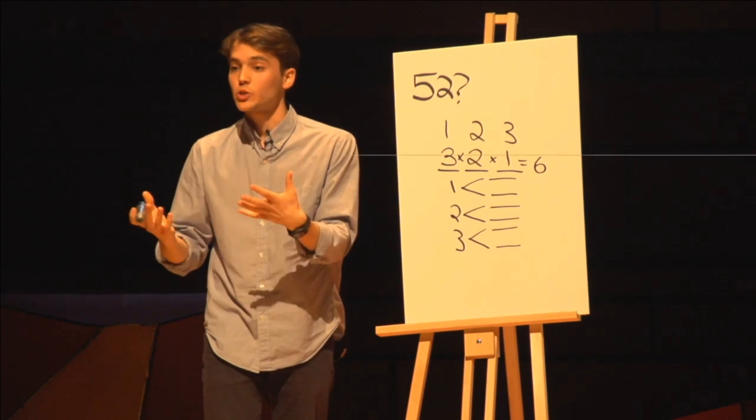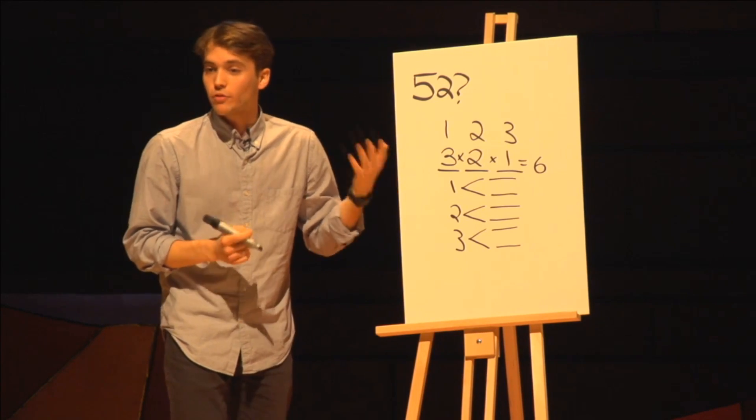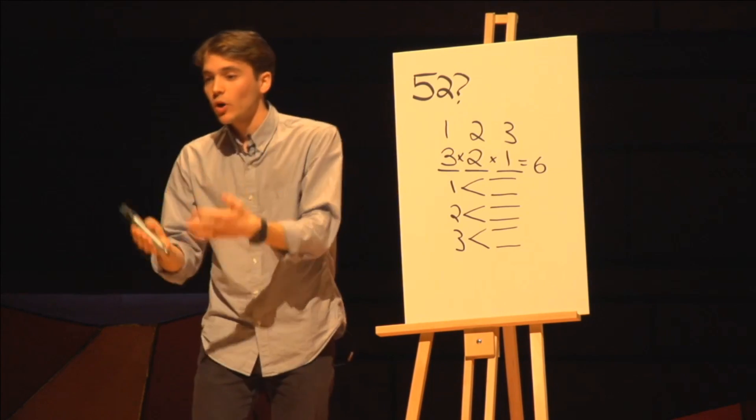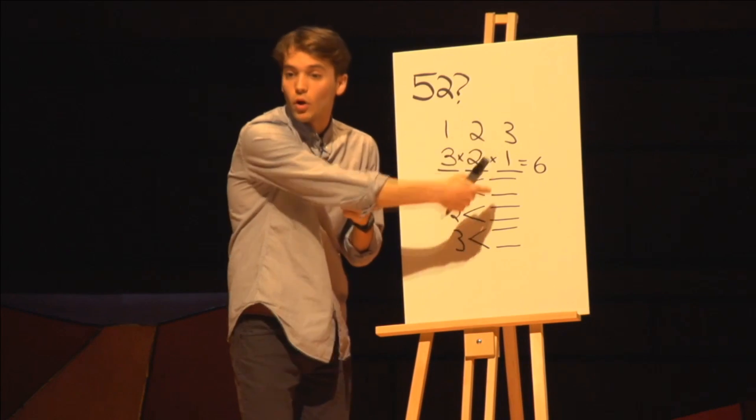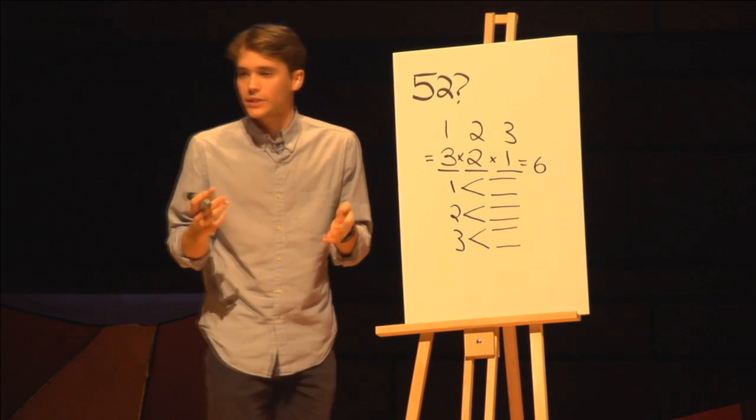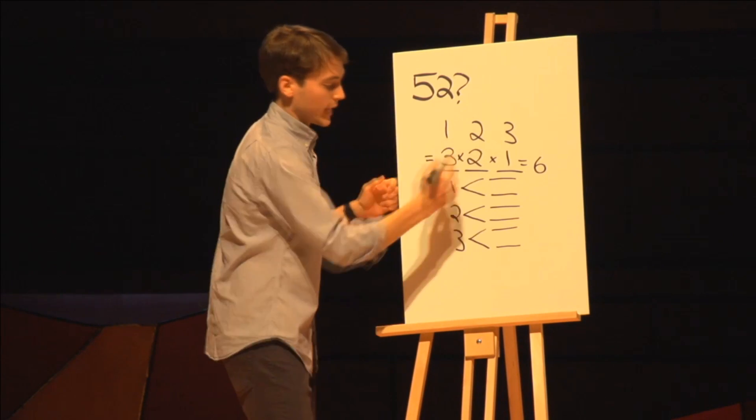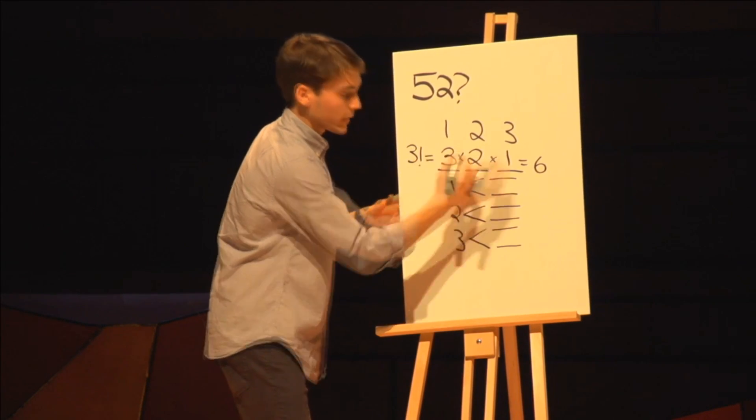The number of ways to find the arrangements within an order of objects is by taking the number of objects we have, three, and then multiplying by smaller integers, three times two, all the way until one. And in math, we use a shorthand for this. It's called a factorial, and we use an exclamation mark to write it. In this case, three factorial equals six.